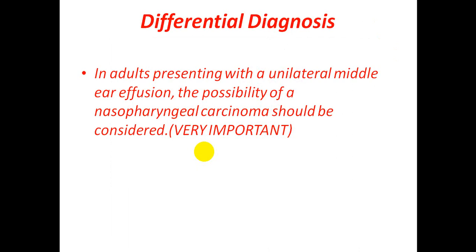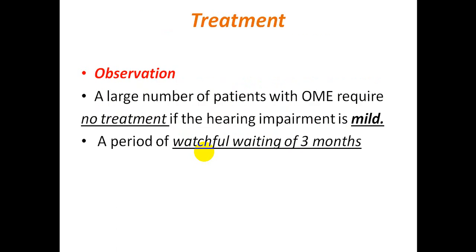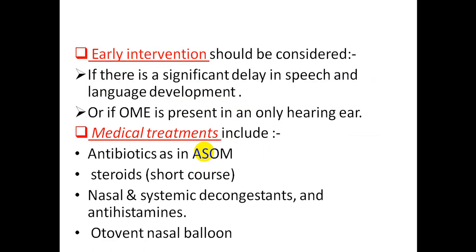In adults presenting with unilateral middle ear effusion, the possibility of a nasopharyngeal carcinoma should be considered. This is very important — any adult patient presenting with unilateral otitis media with effusion, we should exclude nasopharyngeal carcinoma, because one of the most common presentations of nasopharyngeal carcinoma is unilateral otitis media with effusion. Treatment by observation: a period of watchful waiting for three months is appropriate if hearing impairment is mild, but early intervention should be considered in certain cases.